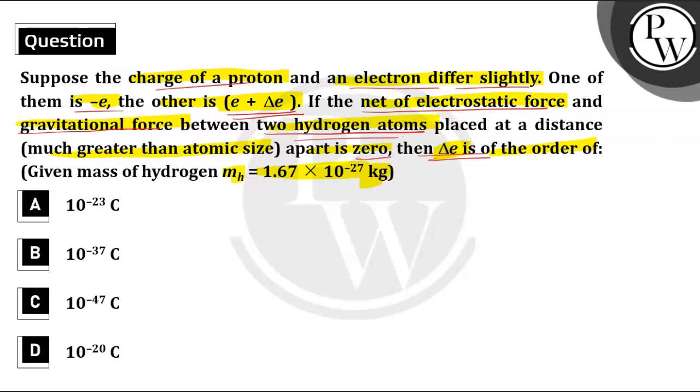Okay. So we can write the electrostatic force of repulsion between the two hydrogen atoms must be equal to the magnitude of gravitational force between the two hydrogen atoms.